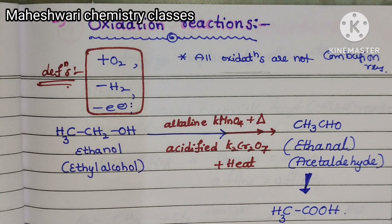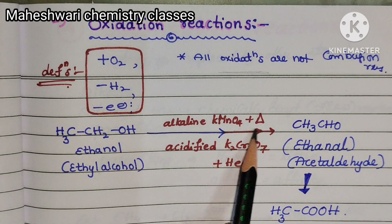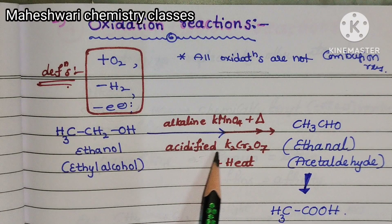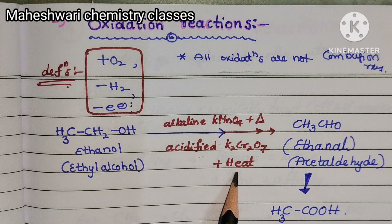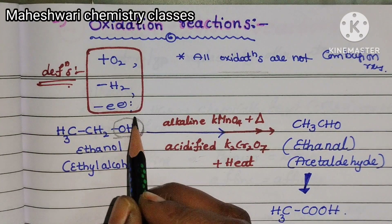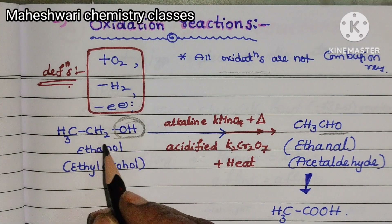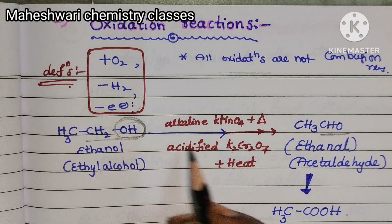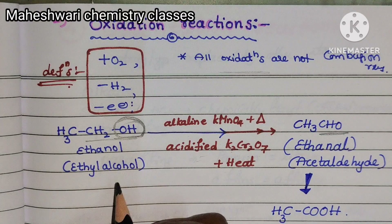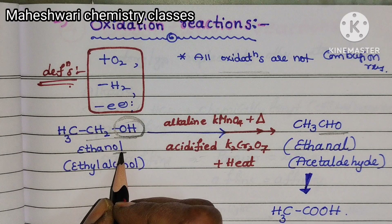Ethyl alcohol, also called ethanol, in the presence of alkaline potassium permanganate, or acidified potassium dichromate, when heated — the alcohol group (OH group) converts to an aldehyde group. So ethyl alcohol converts to ethanal. For alcohol, we use the suffix -OL, and for aldehyde, we use the suffix -AL.